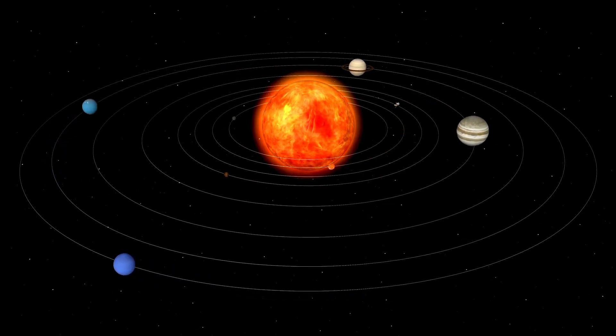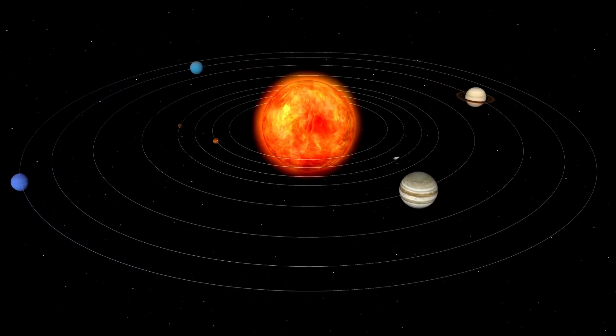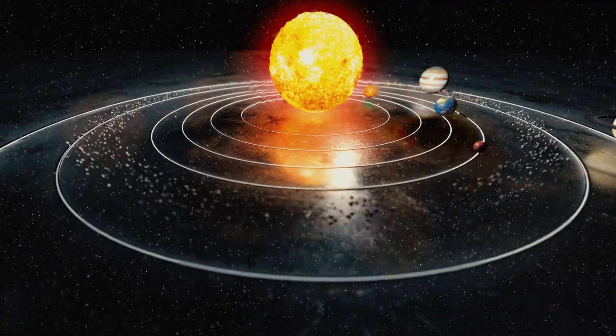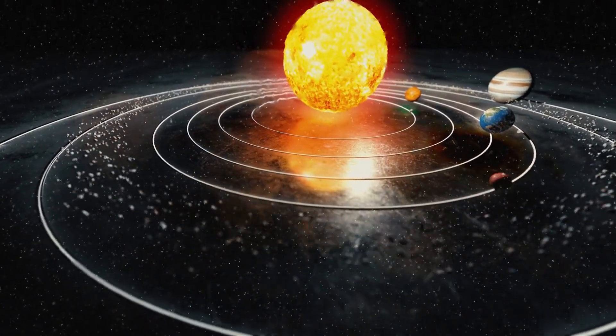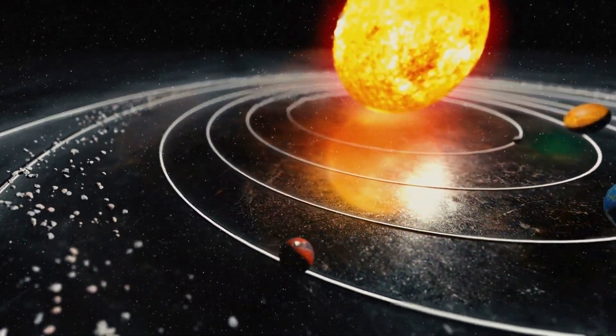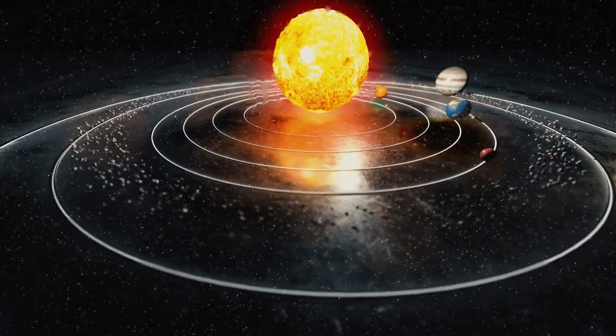Saturn's rings go round and round, icy bands that make no sound. Uranus tilts, it rolls on side, a frozen world with rings that hide. Neptune's winds are strong and fast, the furthest known but not the last.